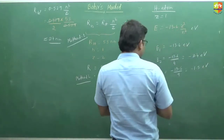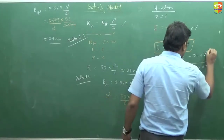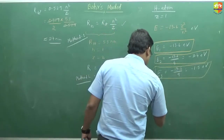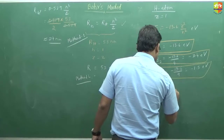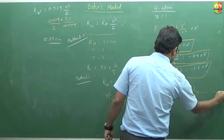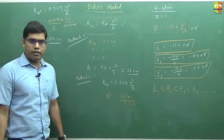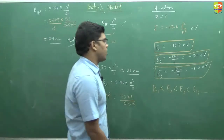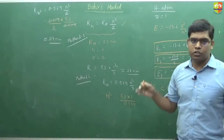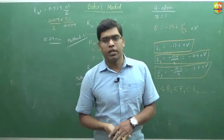So the energy in the first orbit is minimum, and it is increasing as we go outward. The order of energy is E₁ minimum, then E₂, then E₃, E₄, E₅ and so on. When we go away from the nucleus, the energy increases. At infinite distance, the total energy of an electron is zero — it is maximum and the electron is free from the attraction pull of the nucleus.